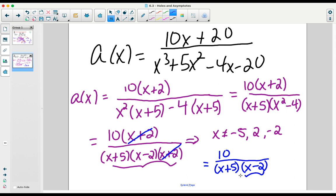The fact that these are both left over at the end tells us that we're going to have vertical asymptotes at x is equal to negative 5 and x is equal to 2.